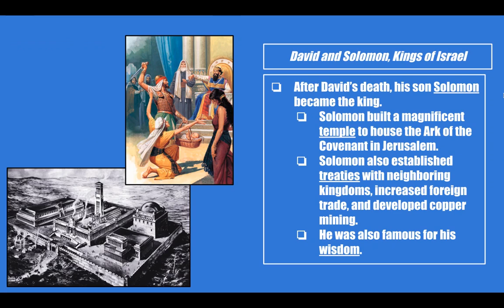A little bit more about David and Solomon: after David's death, his son Solomon became king. Solomon built a magnificent temple to house the Ark of the Covenant in Jerusalem. David had actually wanted to build the temple, but his God said he couldn't for certain reasons, so eventually Solomon did it. Solomon also established treaties with neighboring kingdoms, increased foreign trade, and developed copper mining — expanding the empire considerably. Solomon was also famous for his wisdom. This is a rendering of the temple, and this story displays Solomon's wisdom, which you'll see soon with the DBQ.